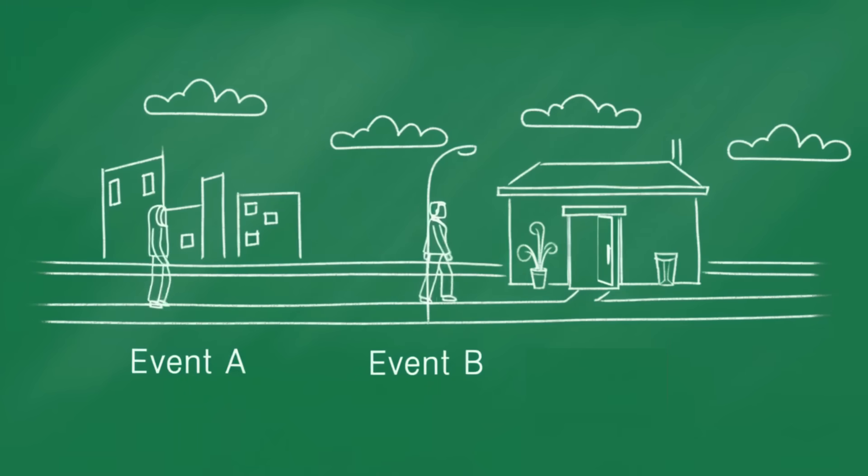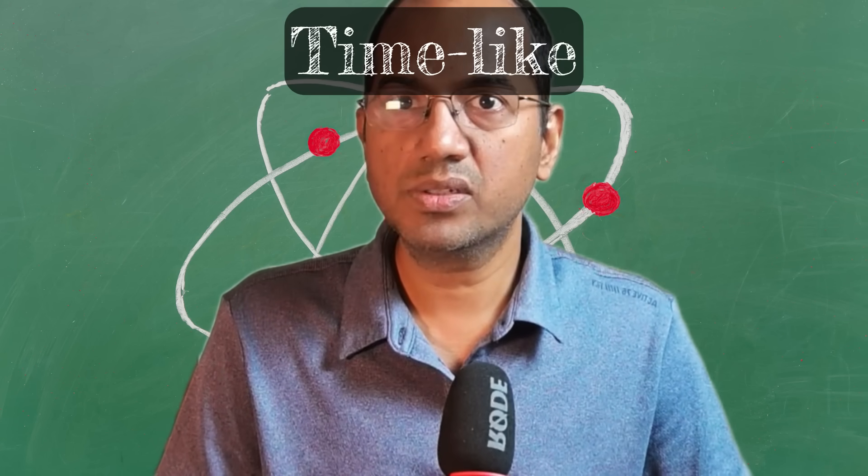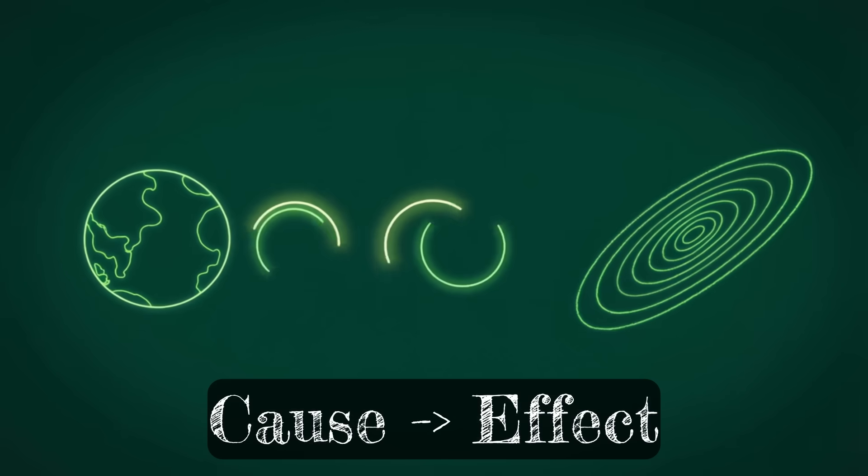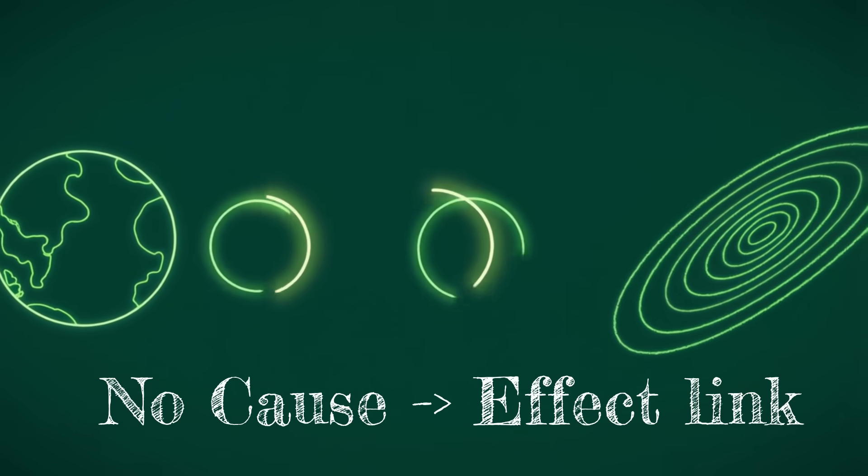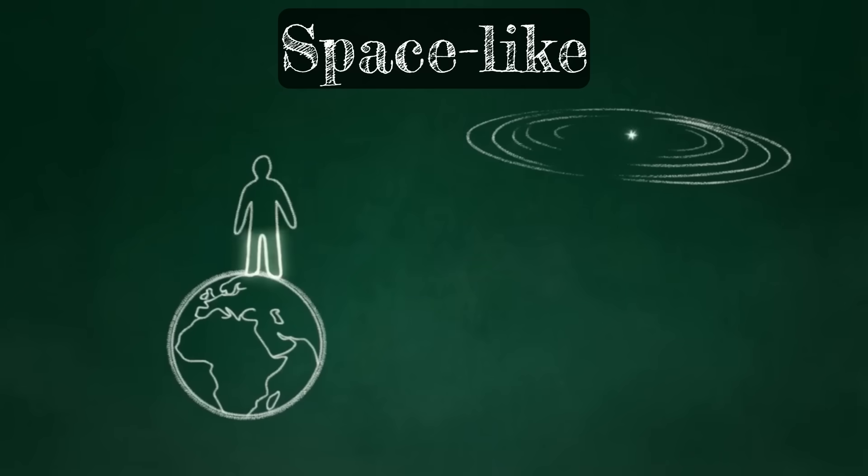For any two events connected by something moving slower than light, like you walking to the office, we call the interval time-like. Cause and effect are possible. There's a clear before and after. For two events so far apart that not even light could travel between them, we call the interval space-like. They are causally disconnected. Like the Cuban Missile Crisis and the birth of a star in another galaxy on the same day are space-like events. One could not have caused the other.